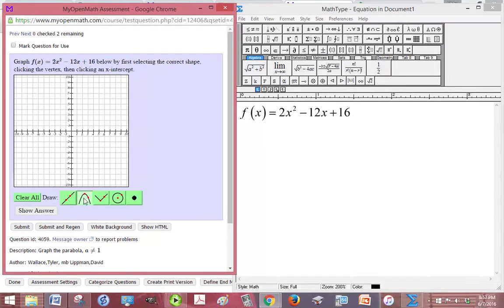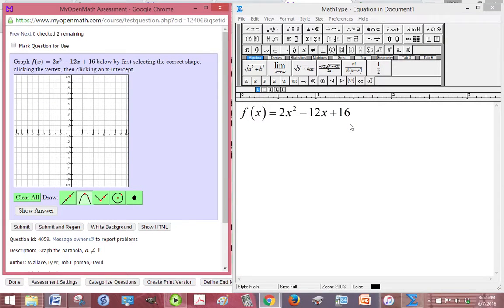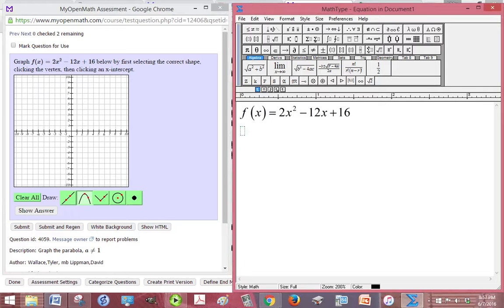So the right shape would be the parabola shape, and in order to graph the vertex, we need to find it. So recall that your vertex is equal to negative b over 2a, and f of negative b over 2a. There are other ways to find the vertex, but this is probably the easiest one.